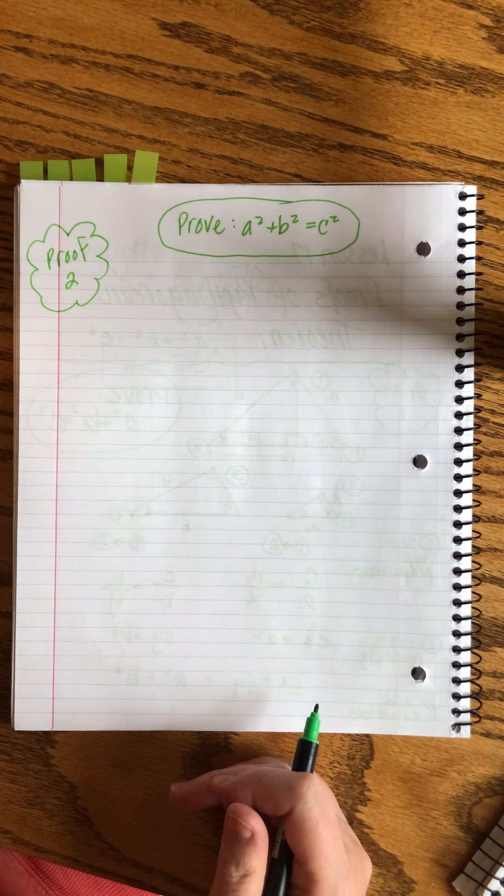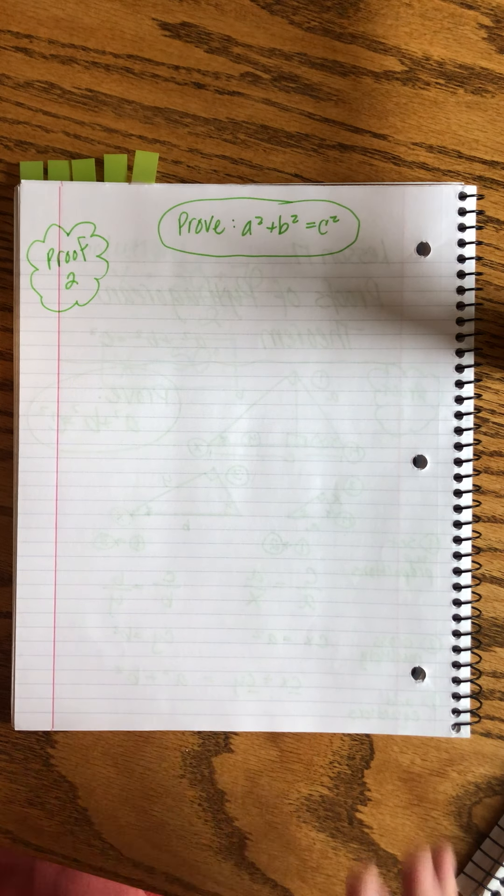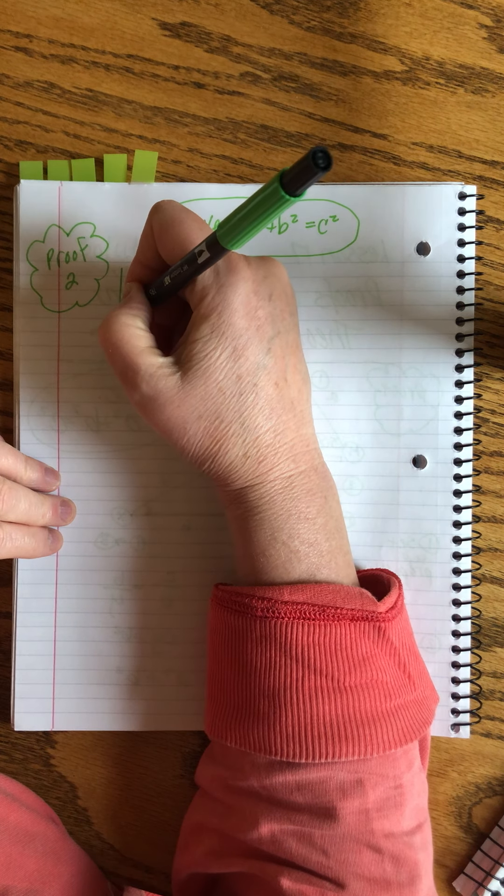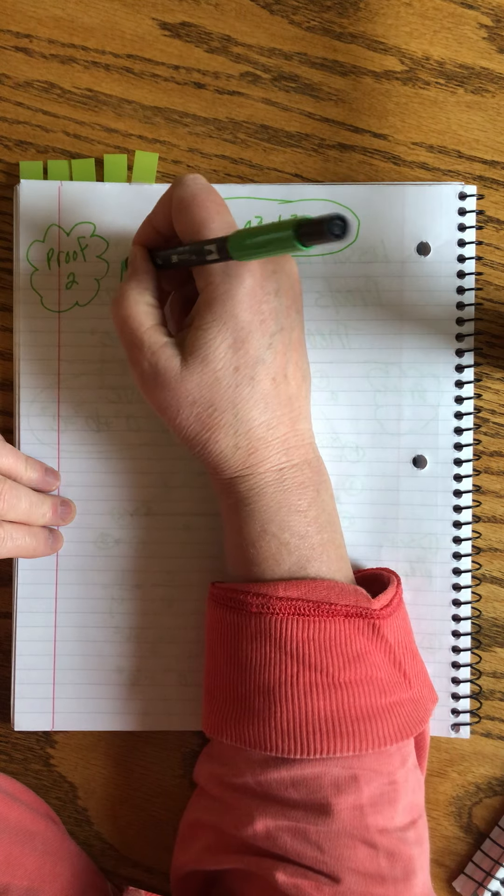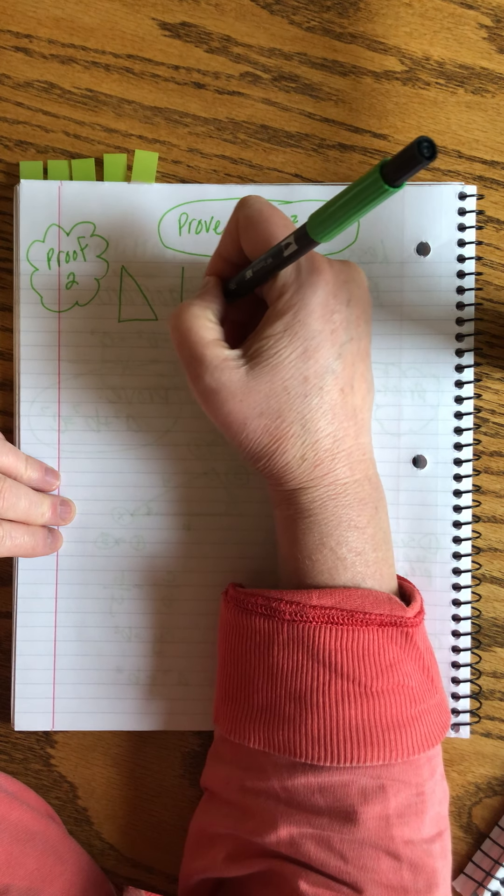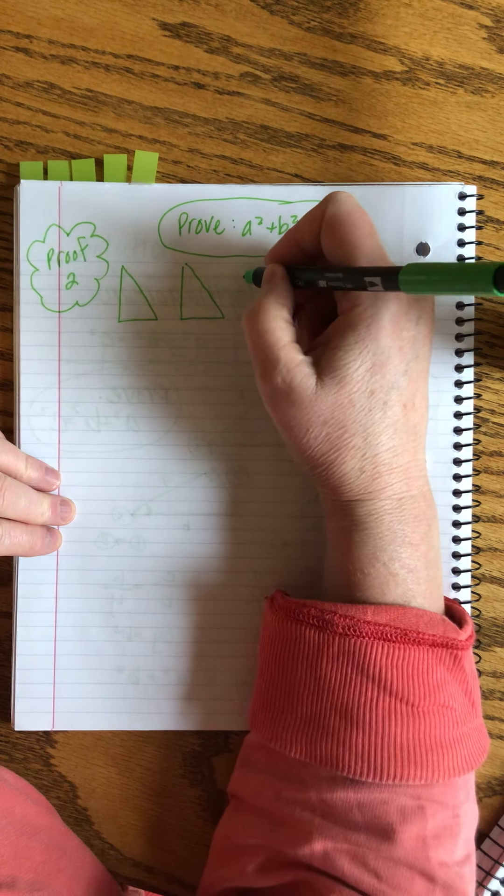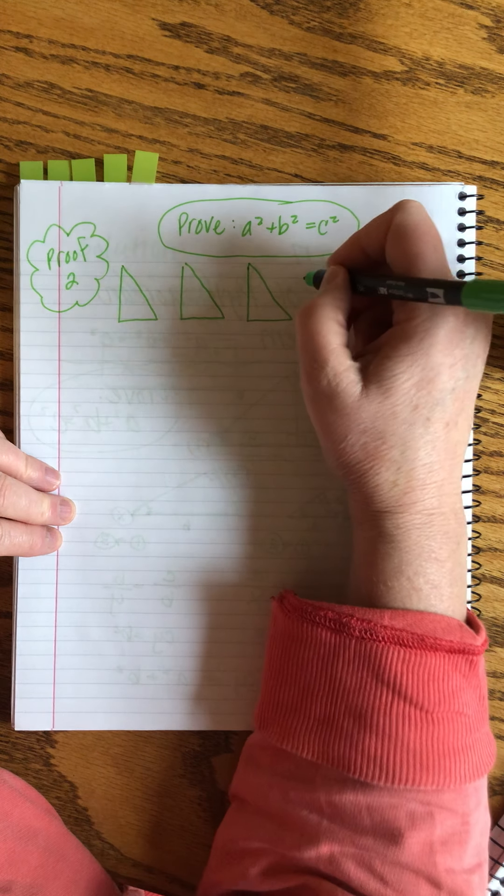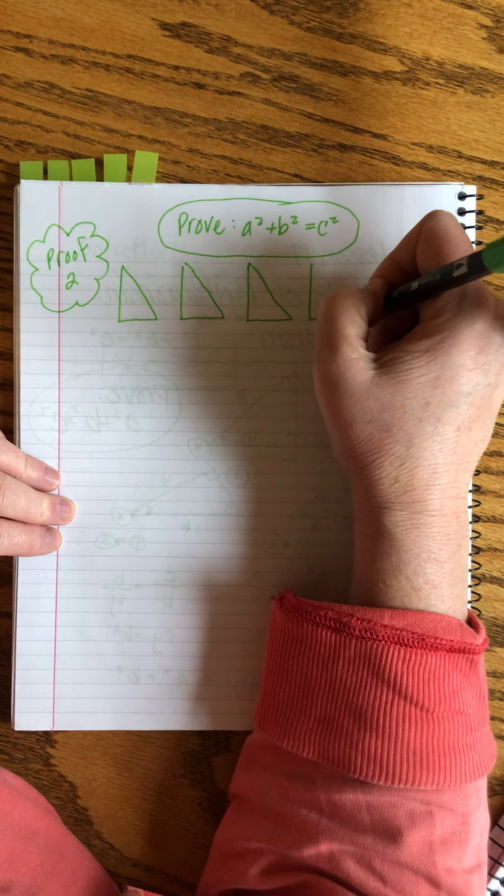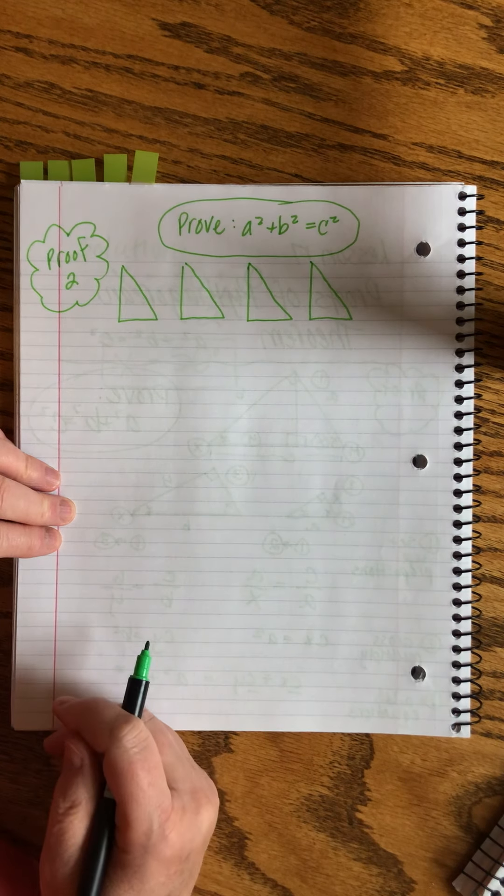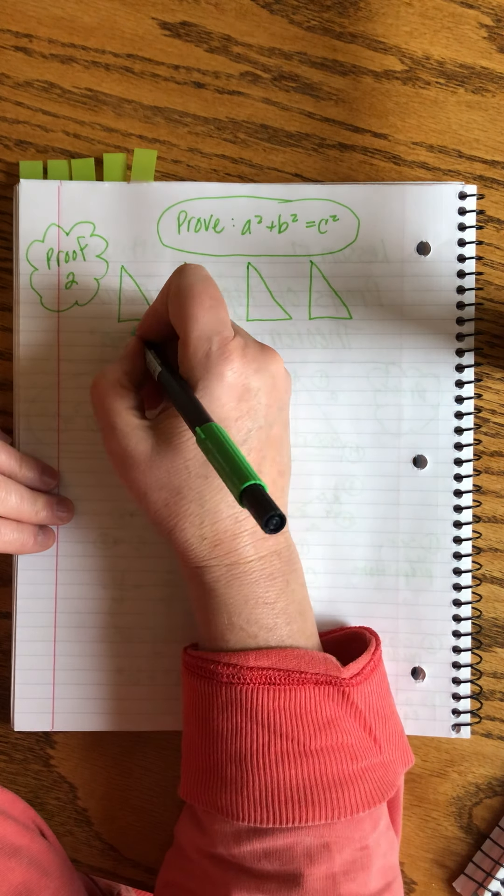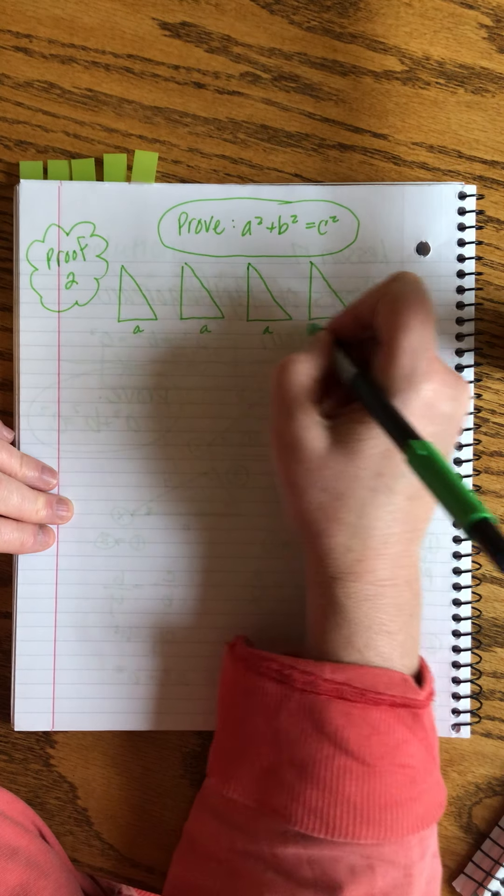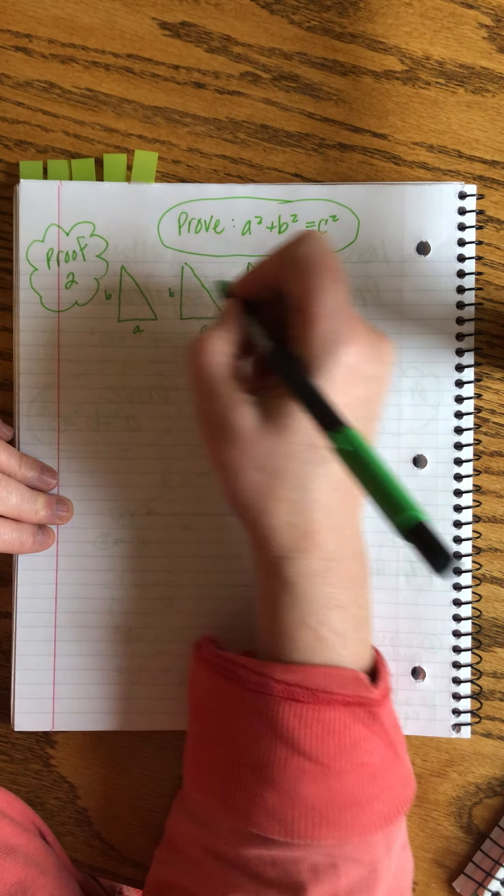Okay. In order to work this second proof, we need to start with a new diagram. And what we're going to do in this situation is we're going to start with four right triangles. They're meant to be identical. I don't know how identically mine are going to end up. But pretend they're all the same. In each of them, we're making the short-leg A, and the long-leg B, and the long-leg B.